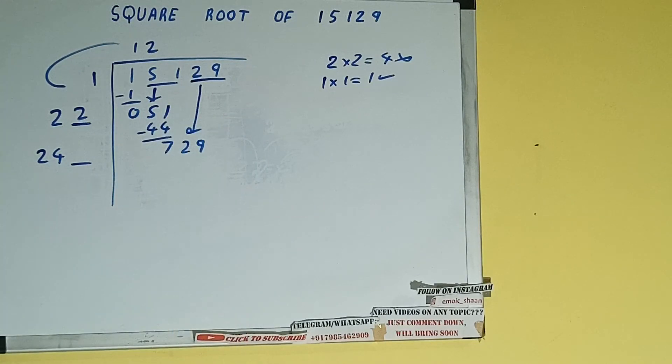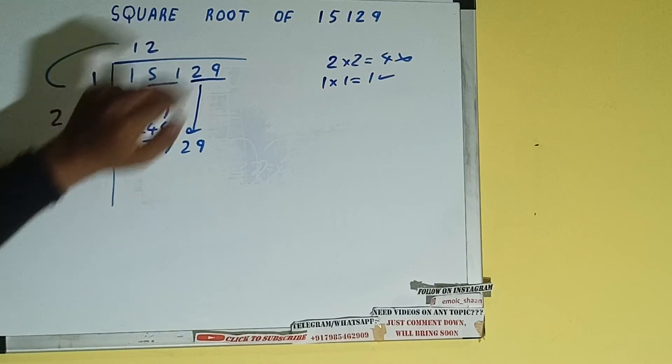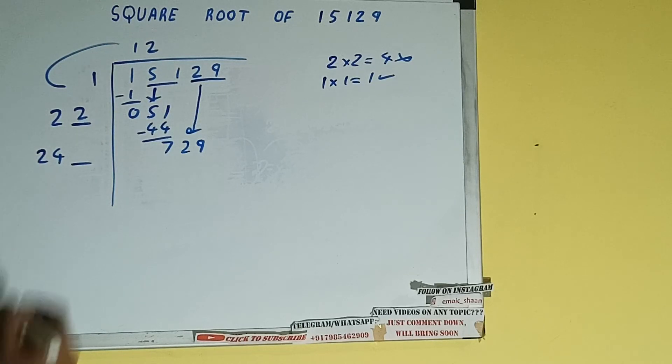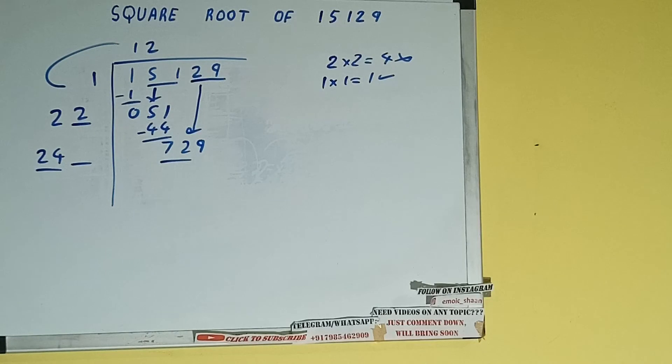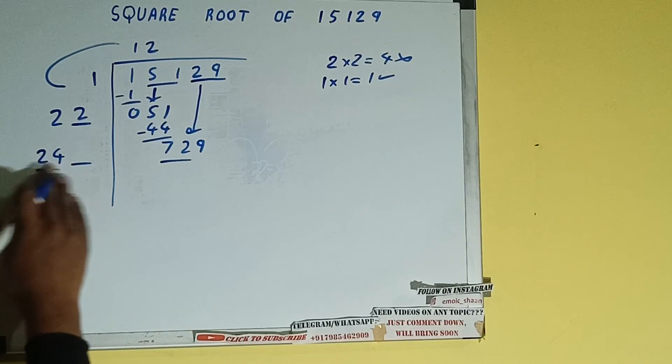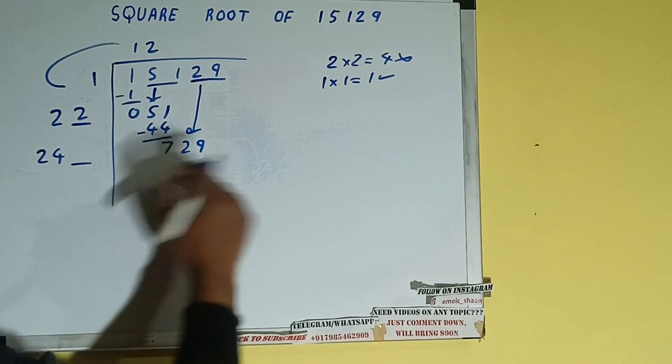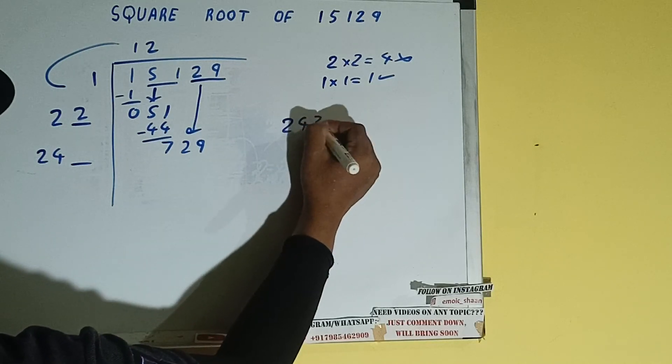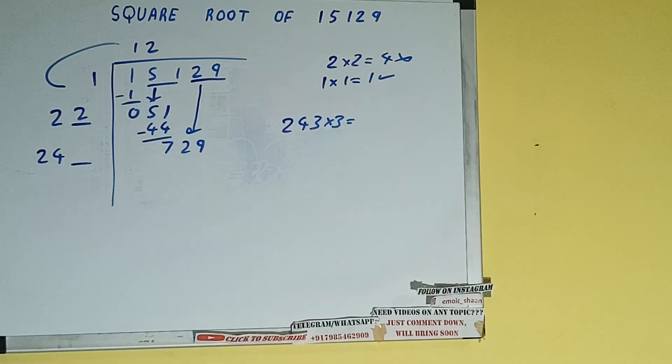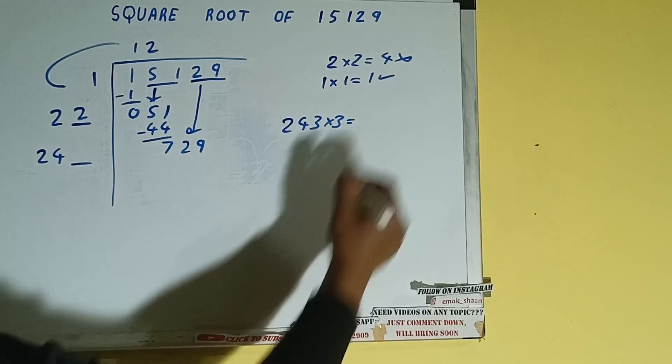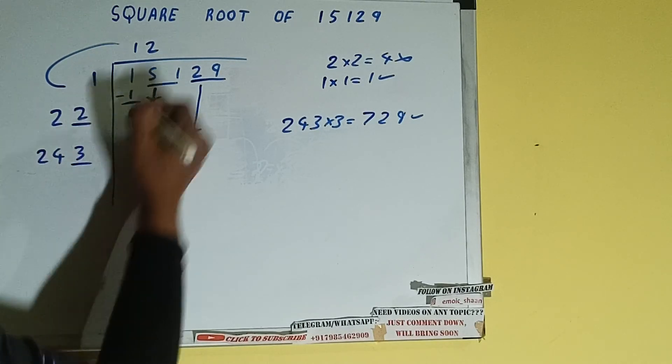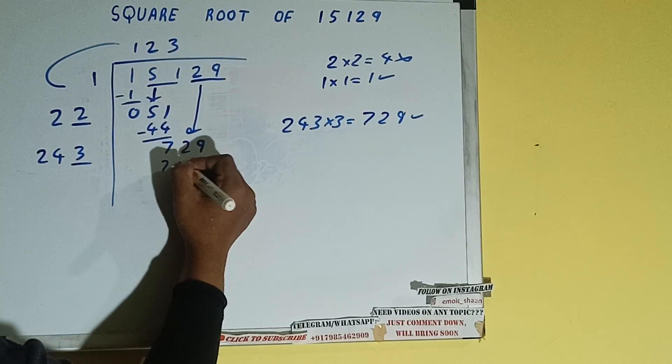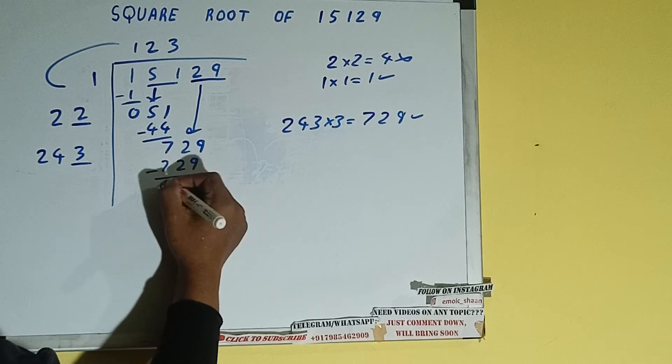Now whatever number we write here, we have to write here also. So we can compare this 24 and 72. 24 three times is 72, right? So we can try out 3 times. 243 into 3 we can try, and it will be 729, which is good to take.